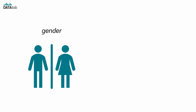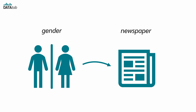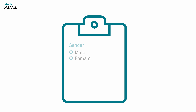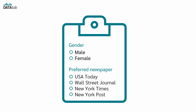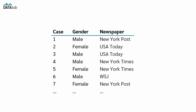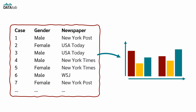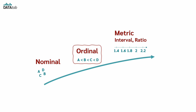For example, we might investigate whether gender has an influence on the preferred newspaper. Both variables are nominal. When we create a questionnaire, we simply list the possible answers for both variables. Since there is no meaningful order for nominal variables, it usually does not matter in which order the categories are listed. We can display the collected data in a table where each row is a person with their respective answer, and use the data to create frequency tables or bar charts.